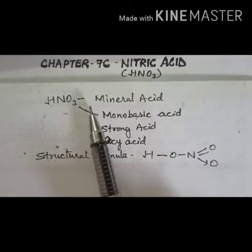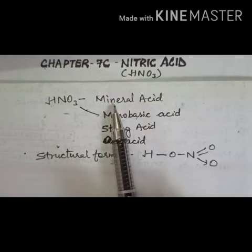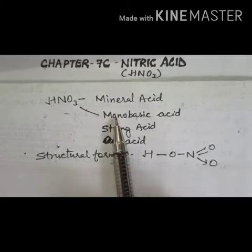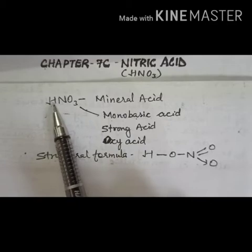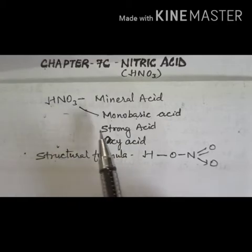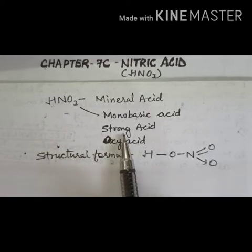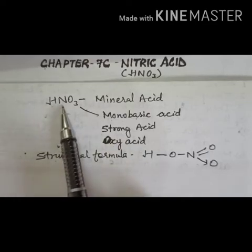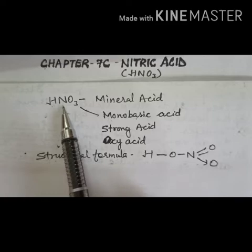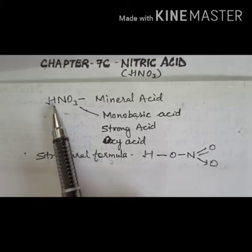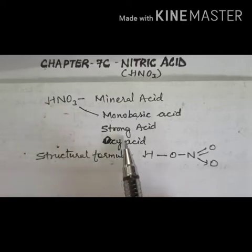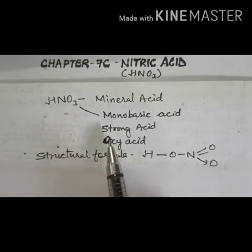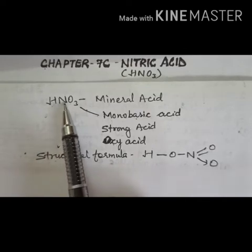Nitric acid HNO3 is also known as mineral acid because it is derived from minerals. It is also called monobasic acid because it contains one replaceable hydrogen ion. It is also known as strong acid because it produces a high concentration of hydrogen ions when dissolved in water, or it almost completely dissociates in aqueous solution. It is also called oxy acid because it contains hydrogen, another element, and oxygen.